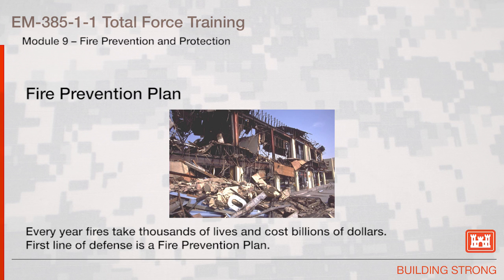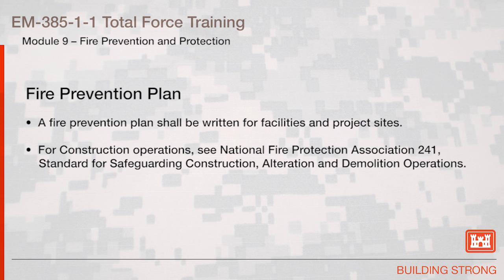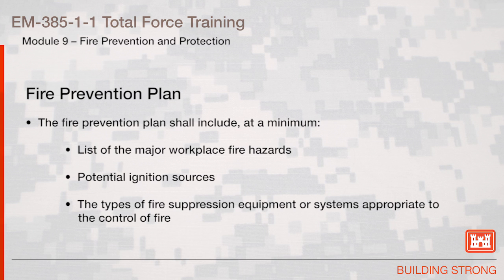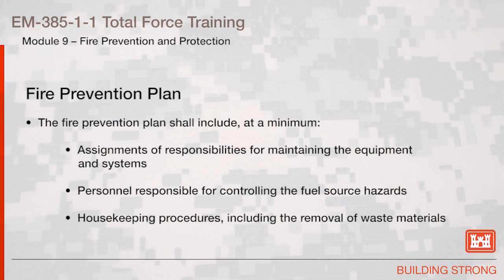Every year, fires take thousands of lives and cost billions of dollars. The first line of defense is a fire prevention plan. A fire prevention plan shall be written for facilities and project sites. For construction operations, see the National Fire Protection Association 241 Standard for Safeguarding Construction, Alteration, and Demolition Operations. For marine operations, see Section 19, Floating Plant and Marine Activities; Section 19.A.04 discusses emergency planning. The fire prevention plan shall include, at a minimum: a list of the major workplace fire hazards, potential ignition sources, the types of fire suppression equipment or systems appropriate to control the fire, assignments of responsibilities for maintaining the equipment and systems, personnel responsible for controlling the fuel source hazards, and housekeeping procedures including the removal of waste materials.